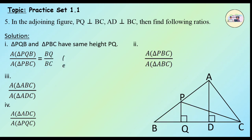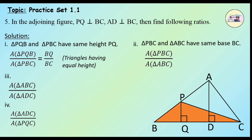Question 2: Find area of triangle PBC upon area of triangle ABC. Triangle PBC and triangle ABC have the same base BC. Therefore, the ratio of areas equals the ratio of their corresponding heights. So, area of triangle PBC upon area of triangle ABC = PQ upon AD.